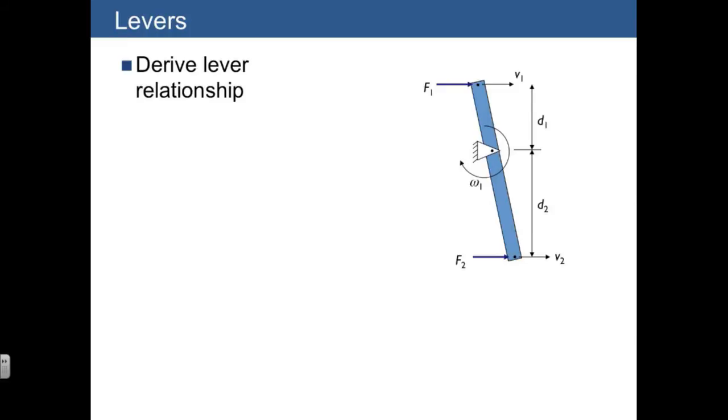We can also examine a lever. In this case, what we have is a lever with moment arms D1 and D2 and two forces that are applied, F1 and F2. And the velocities of the two ends of the lever are actually not equal. In fact, we expect them to be unequal because we can have two unequal moment arms here that are going to determine those.